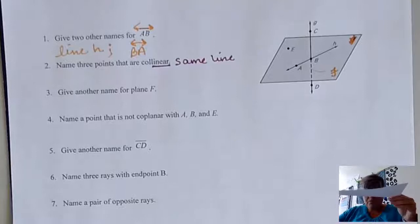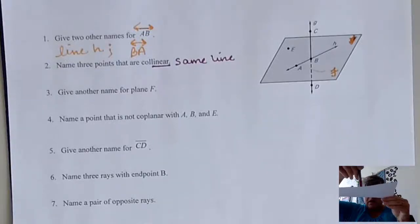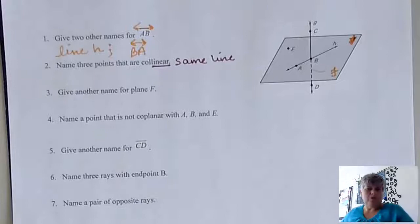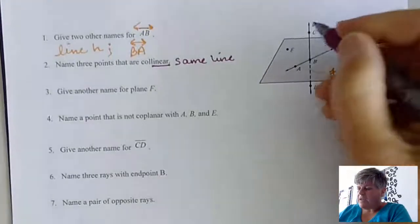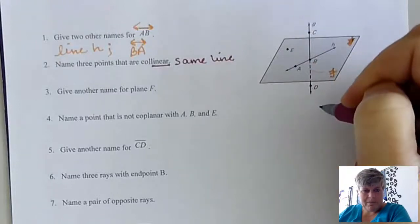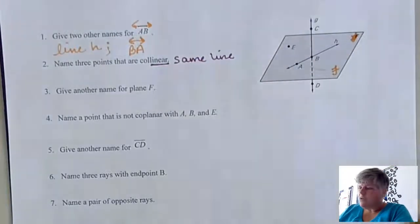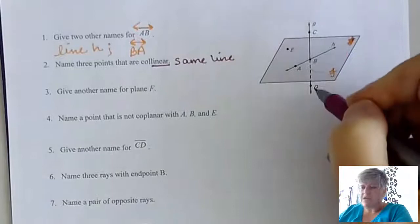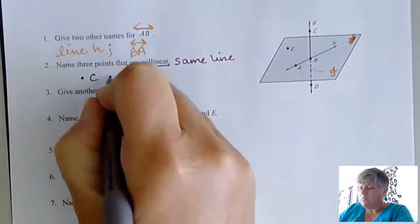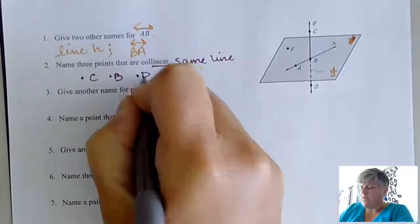But basically you've got your plane and it's like we put a line down through it and it's coming out that other side, as if we poked it right through. That's what that dotted line represents. And so that is a solid line going down through that plane. So three points that are collinear, C, B, and D, are all on that same line. So they're collinear.